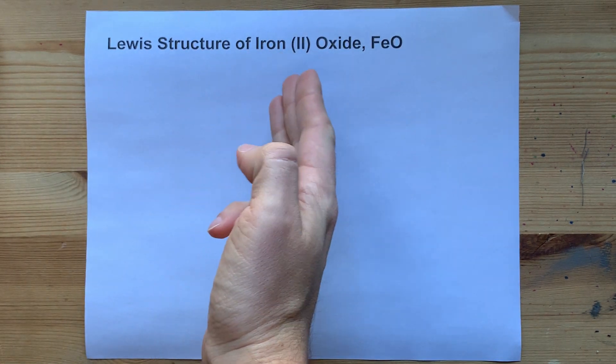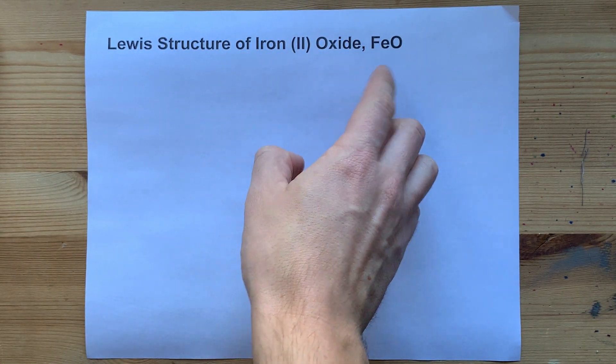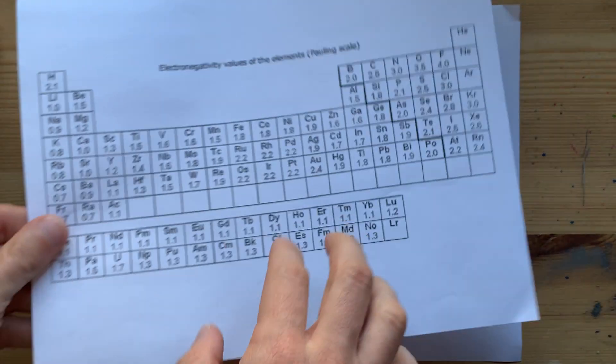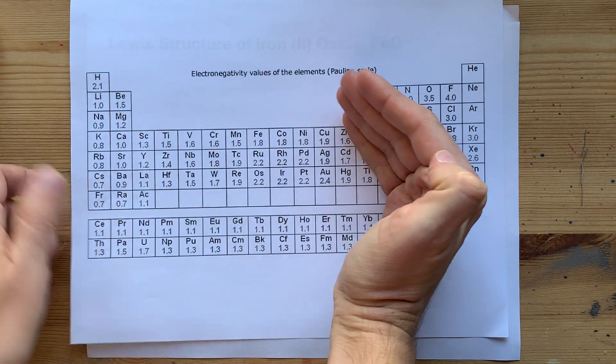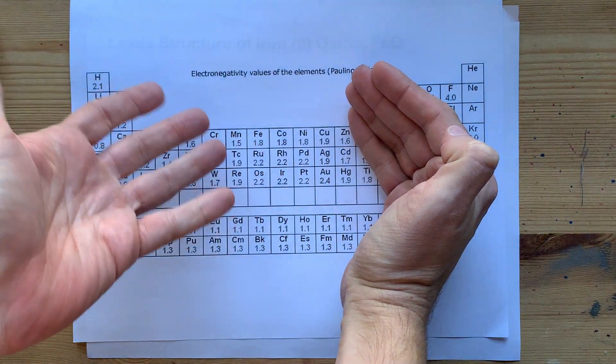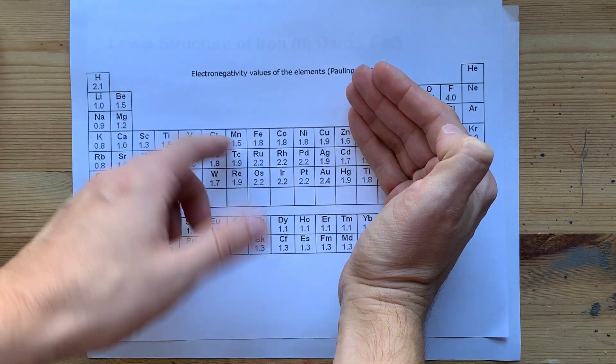The Lewis structure of iron 2-oxide, which is FeO, is going to feel easy after this. Iron is a metal. I mean, it's a typical metal. It's iron after all.